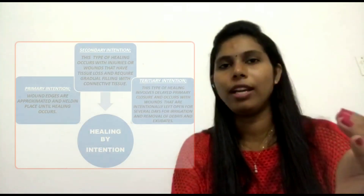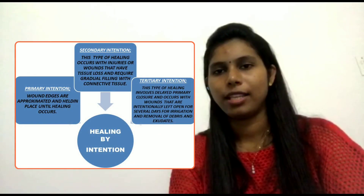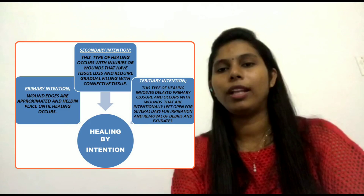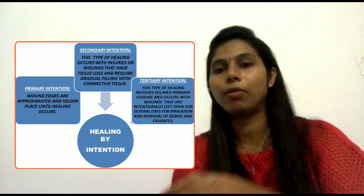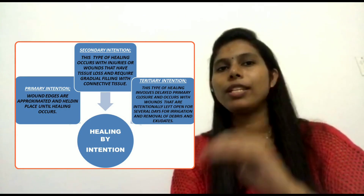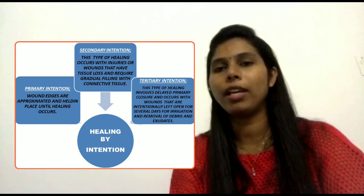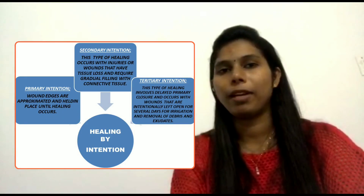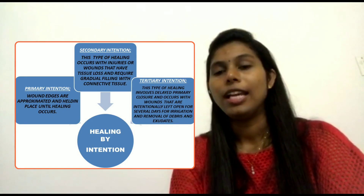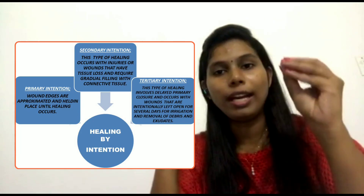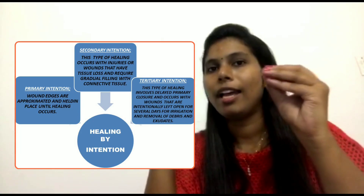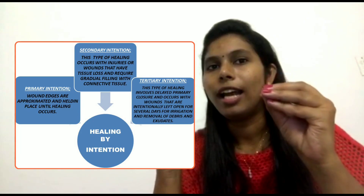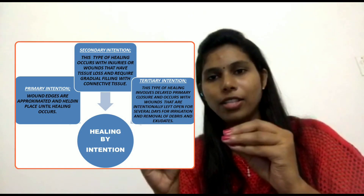So in this Healing by Intention, we divide into three types or three stages based on the type of wounds, margins, and the type of wounds. So the first one is called Primary Intention. What is Primary Intention? In the Primary Intention, the wound edges are approximated and held in place until the healing occurs.